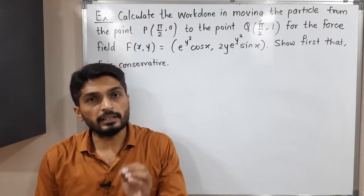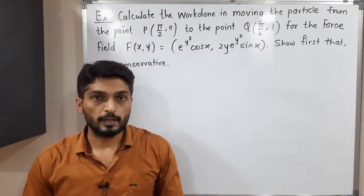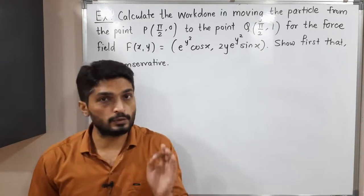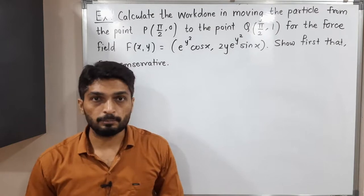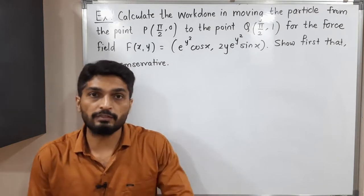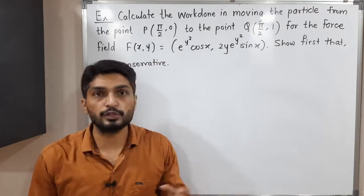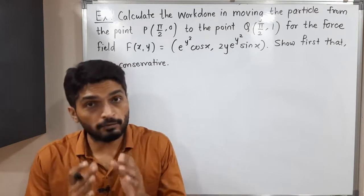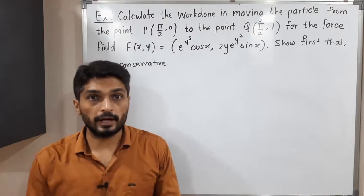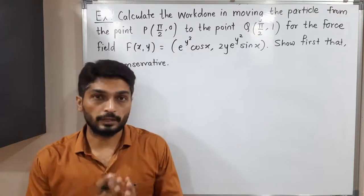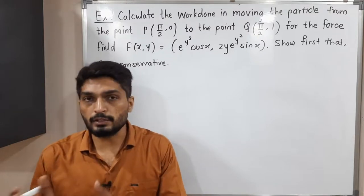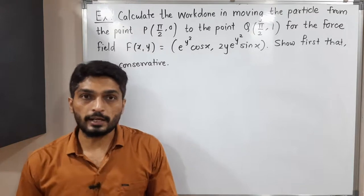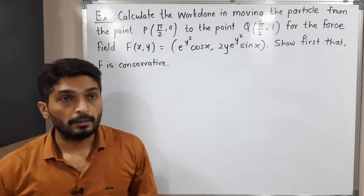So the method is fixed. First, we try to prove the field is conservative. If it is conservative, we find its potential function. And with the help of that, we find work done. So in previous videos we have seen that technique. Let us start to do the same.